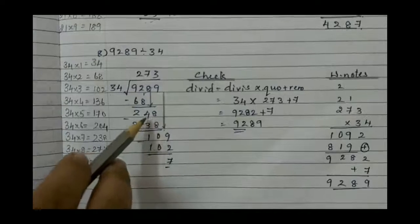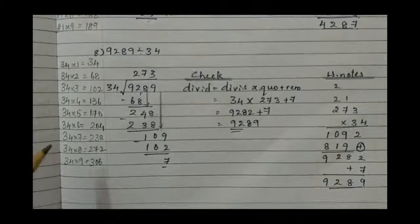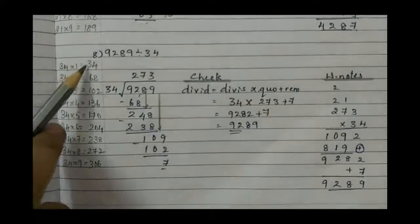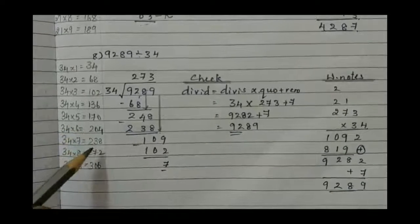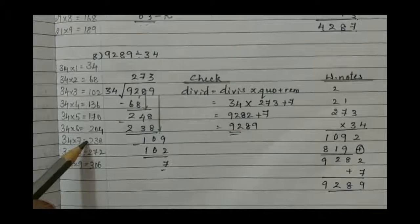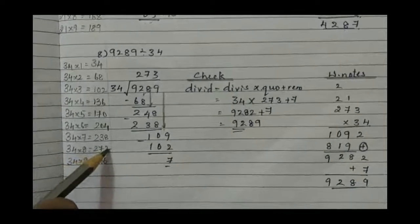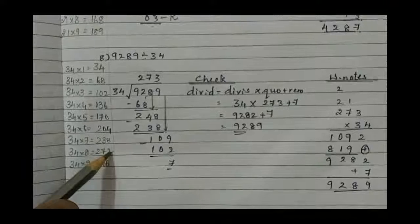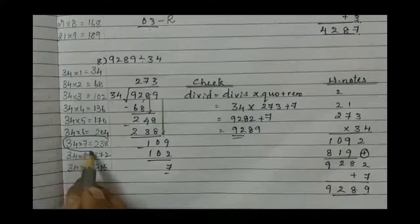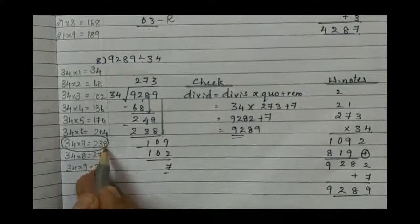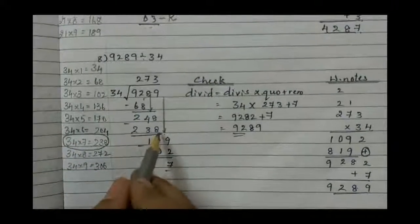Bring it down, so it becomes 248. Do you get 248 in the table? No, search it: 34, 68, 102, 136, 170, 204. Next is 238, lesser than 248. Next to it is 272, so we can't take this one. We need to go to the upper one, that is 34 into 7 gives 238.